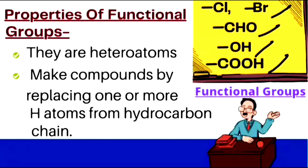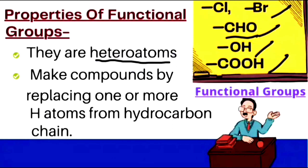Now let's see some properties of functional groups. The first property is that they are heteroatoms — meaning these atoms are different from carbon and hydrogen. For example, in CHO we have carbon, hydrogen, and oxygen, which are different atoms.